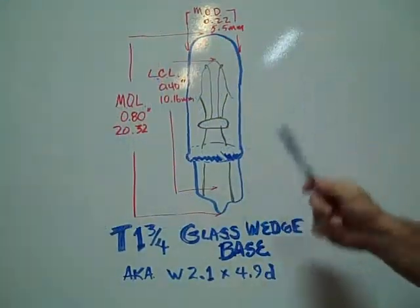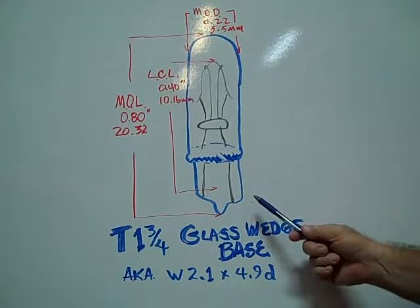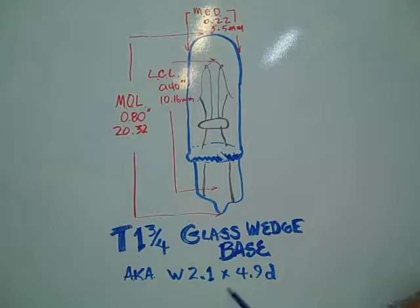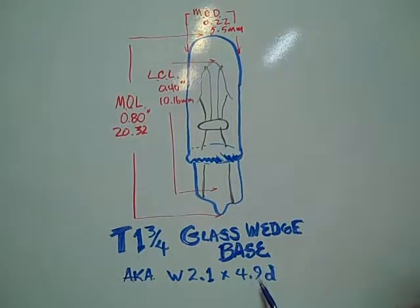The T1-3 quarter glass wedge base bulb, also known as a W2.1 x 4.9 D.